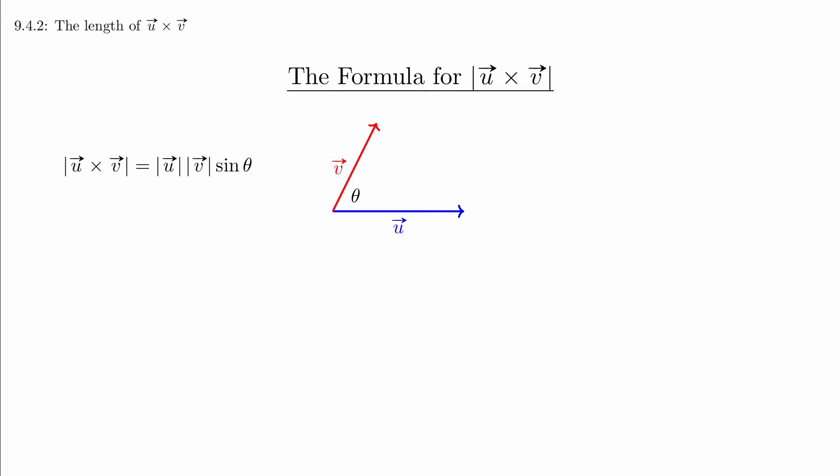Again, the angle between vectors is defined to be the angle created when the tails are put together. We're going to focus on the consequences of this formula.